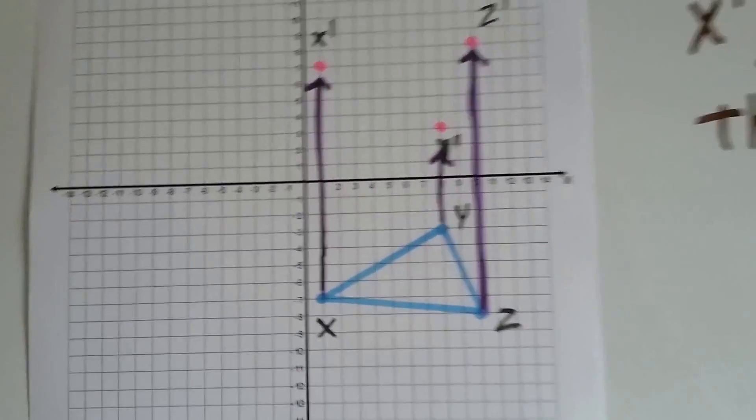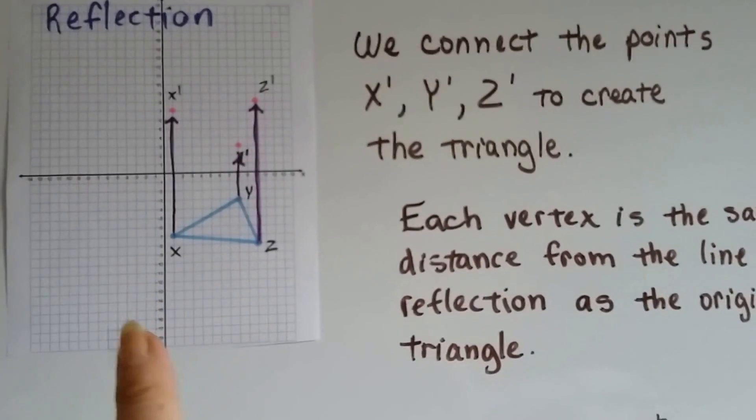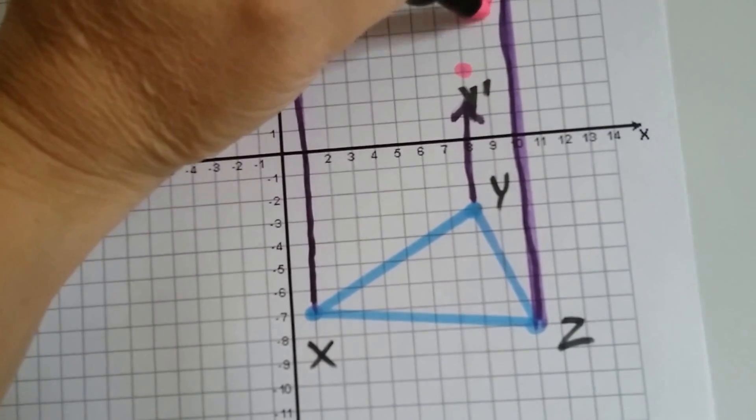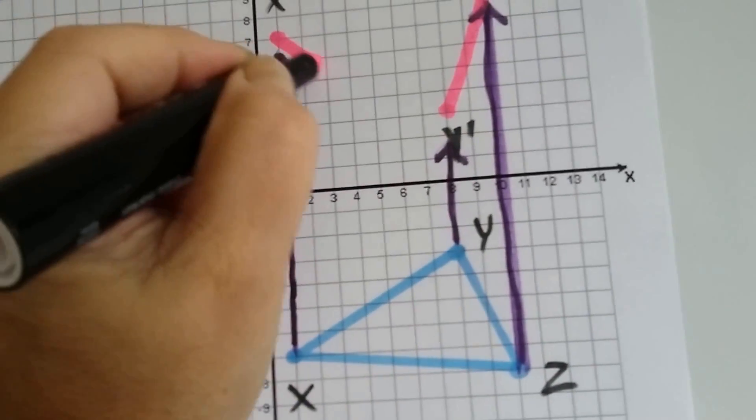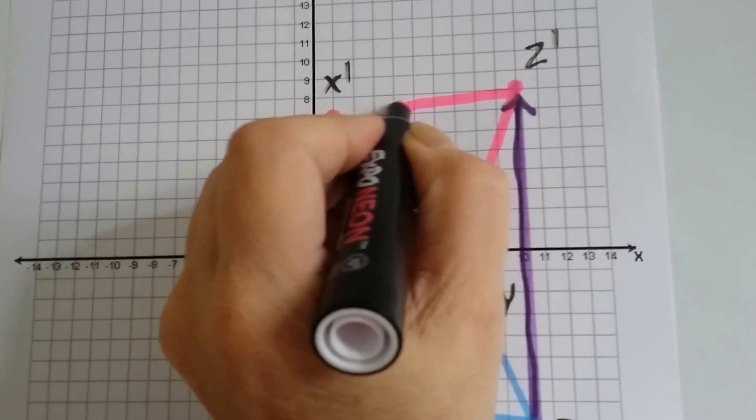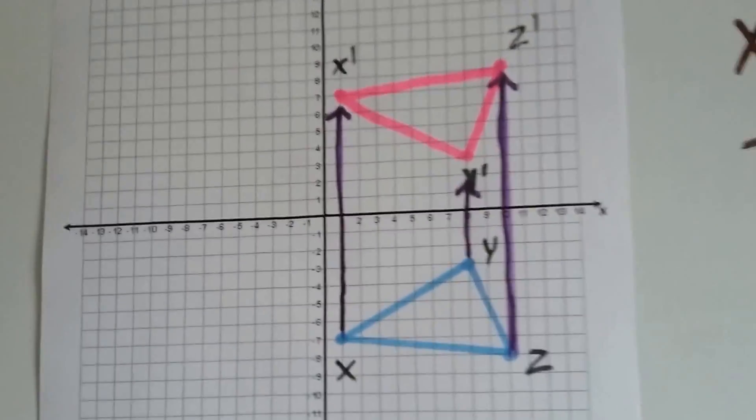Now we can connect the points of x prime, y prime, and z prime to create the triangle. I hope I can do this straight without making any mistakes here. It's kind of hard to do while holding the camera here.